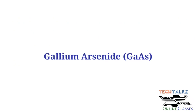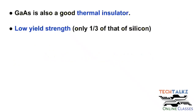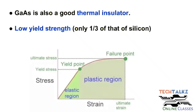Next, gallium arsenide characteristics: it is a thermal insulator and a direct band gap semiconductor, and it is used in opto-electronics. However, the yield strength is a disadvantage when compared with silicon, because yield strength is the stress a material can withstand without permanent deformation.